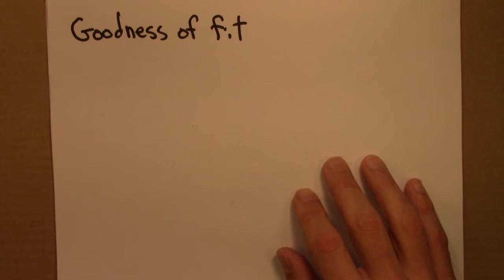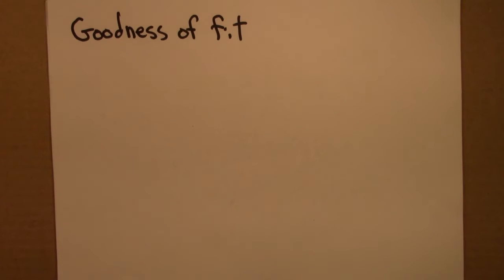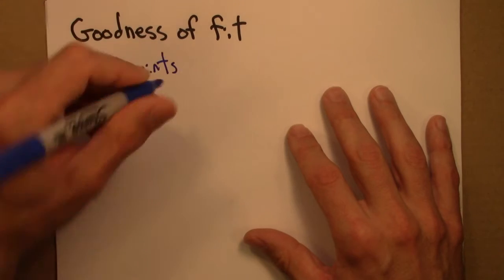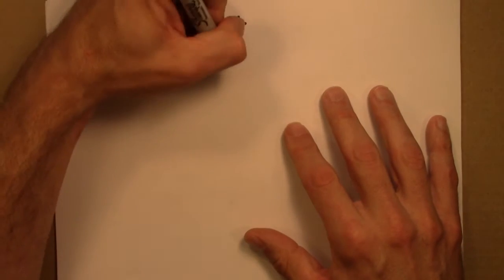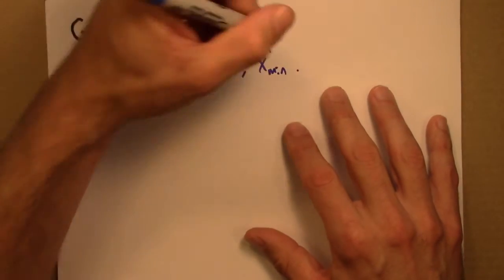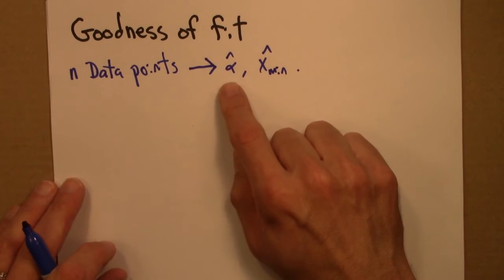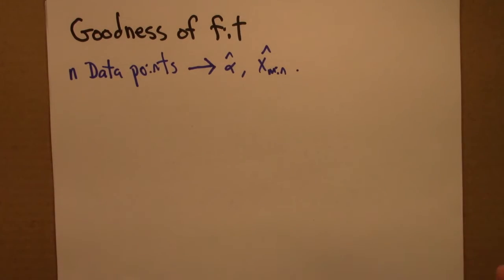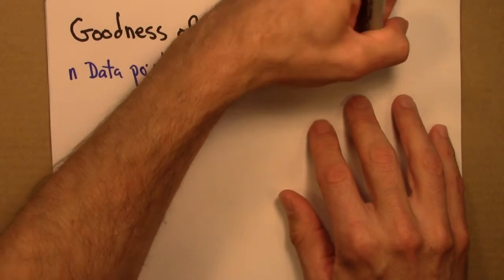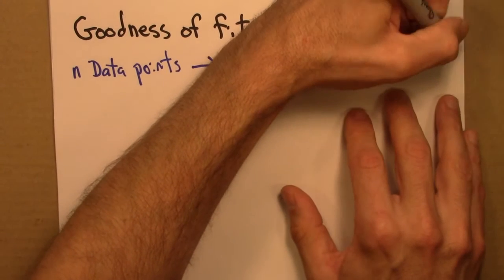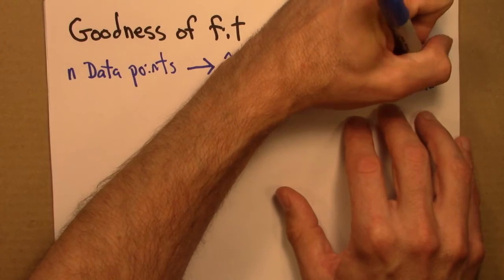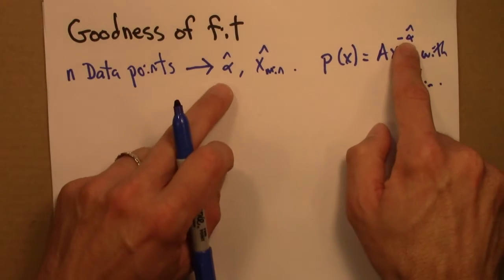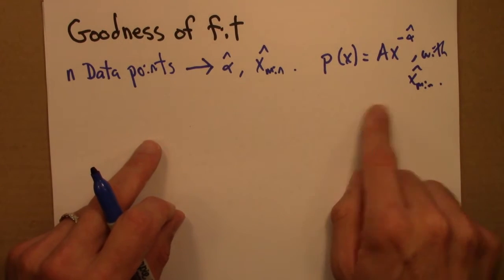Here's an approach for determining the goodness of fit for a power law. Here's the situation: we have n data points and we use those to figure out alpha hat and xmin hat. So we follow the procedures described in previous videos for figuring out the best estimate for alpha hat and the best estimate for xmin. So then we now have a fit. We think of this as a model: p(x) = Ax^(-alpha hat) with xmin. So what we're saying is our data is described by this distribution, Ax to the minus alpha hat we just estimated, and that this describes only the distribution starting at xmin hat, which we also just calculated.